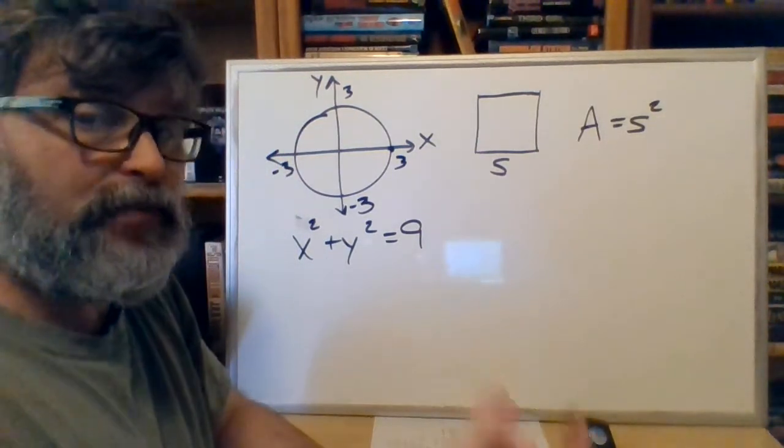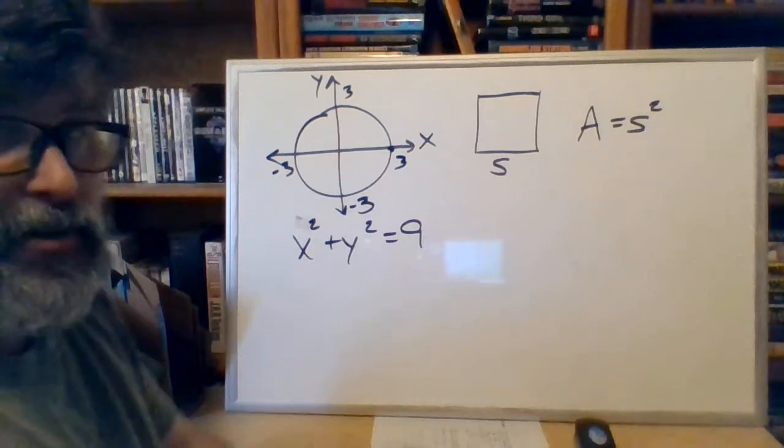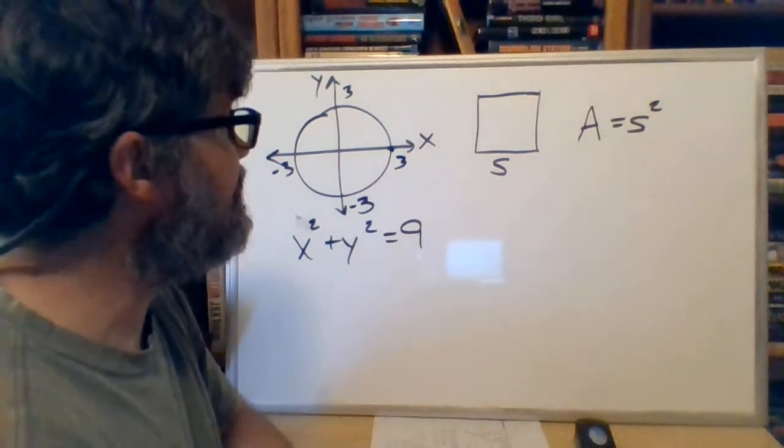The dx part gives me the width. dx is the width of each one of those, which is getting smaller and smaller and smaller and going away to zero. Here we go.